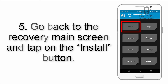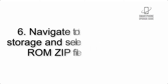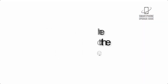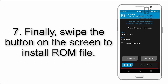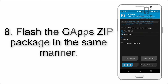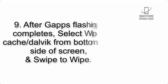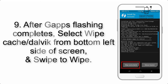Step 5: Go back to the recovery main screen and tap on the Install button. Step 6: Navigate to the storage and select the ROM zip file. Step 7: Swipe the button on the screen to install the ROM file. Step 8: Flash the GApps zip package in the same manner.